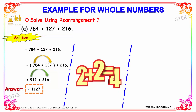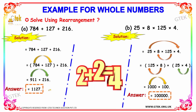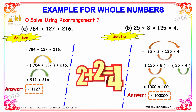This is how we solve these kinds of questions. Let's see another example: 25 into 8 into 125 into 4. Since this is a multiplication operation, we need to multiply the terms. As per the question, we have 25 into 8 into 125 into 4.